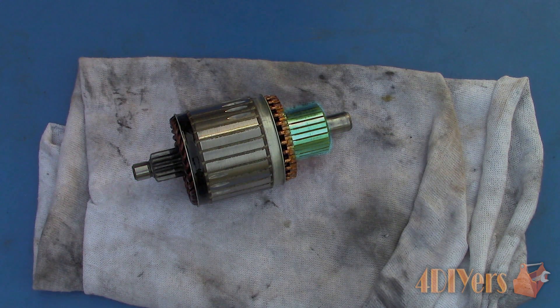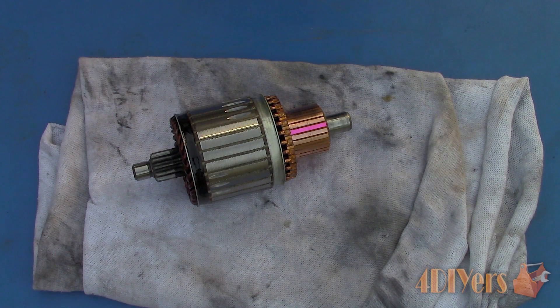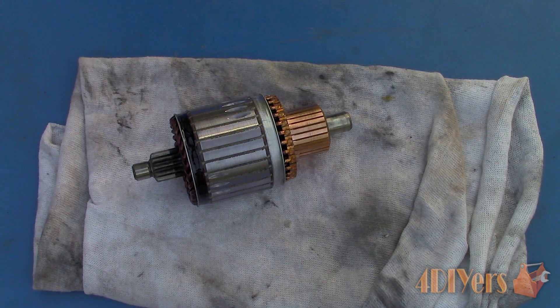Next is a commutator that is made up of various bars where the brushes ride. This creates a connection to allow the electricity to flow through. Each of the commutator bars are connected to the armature windings.